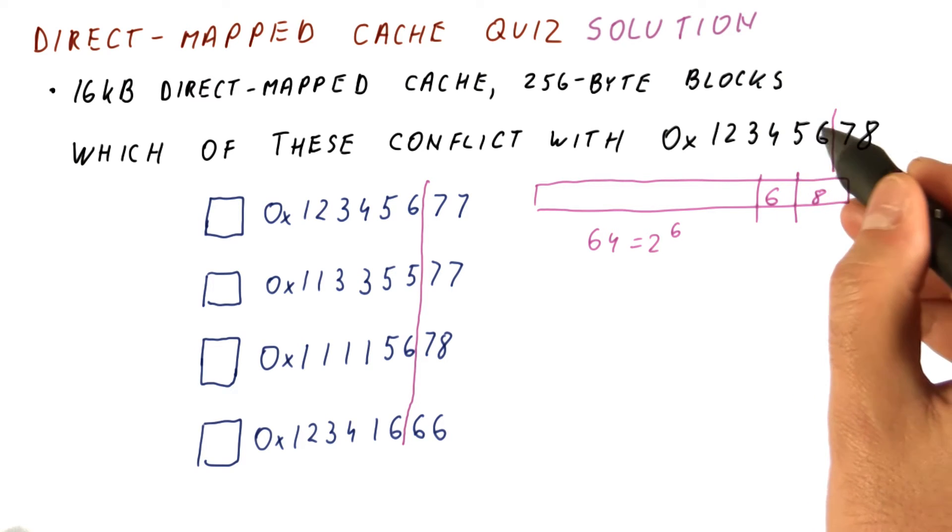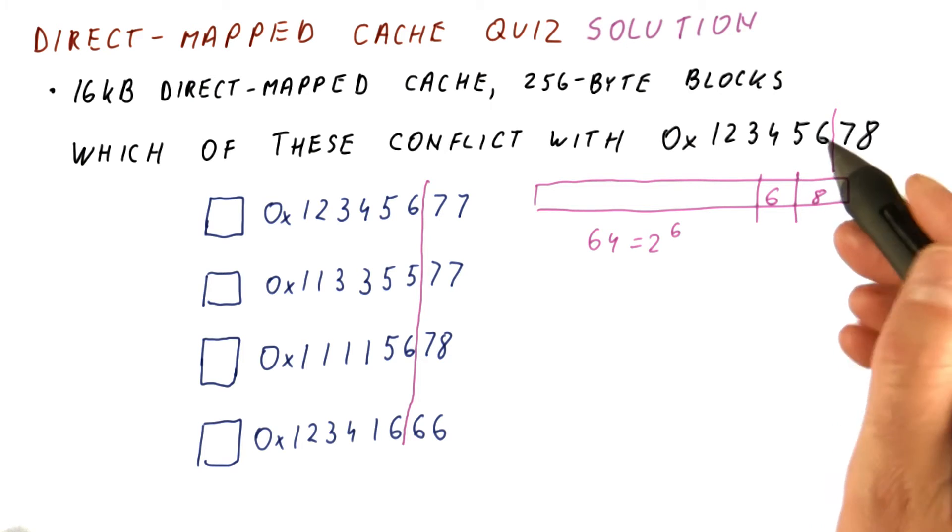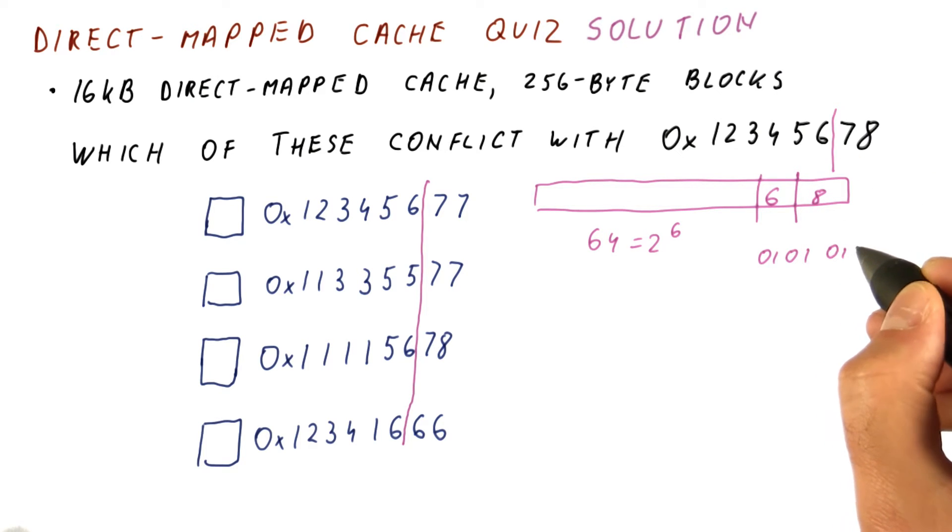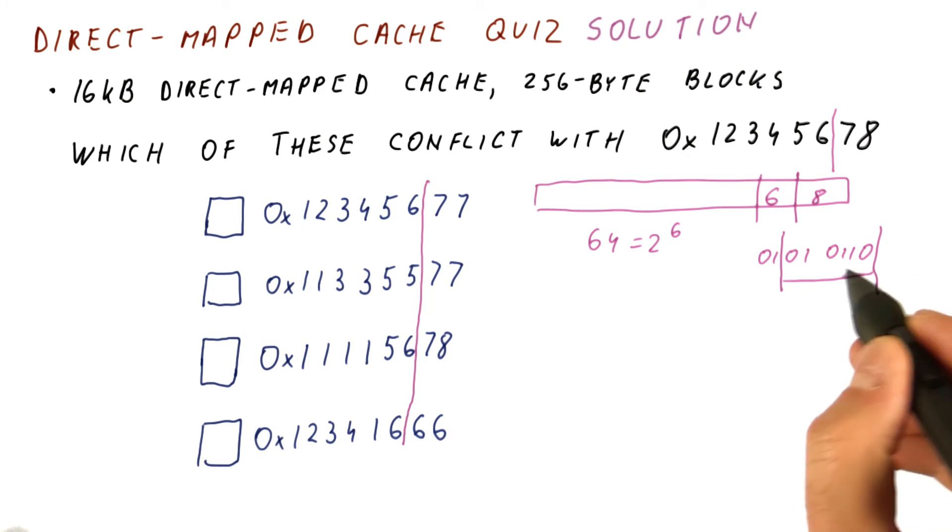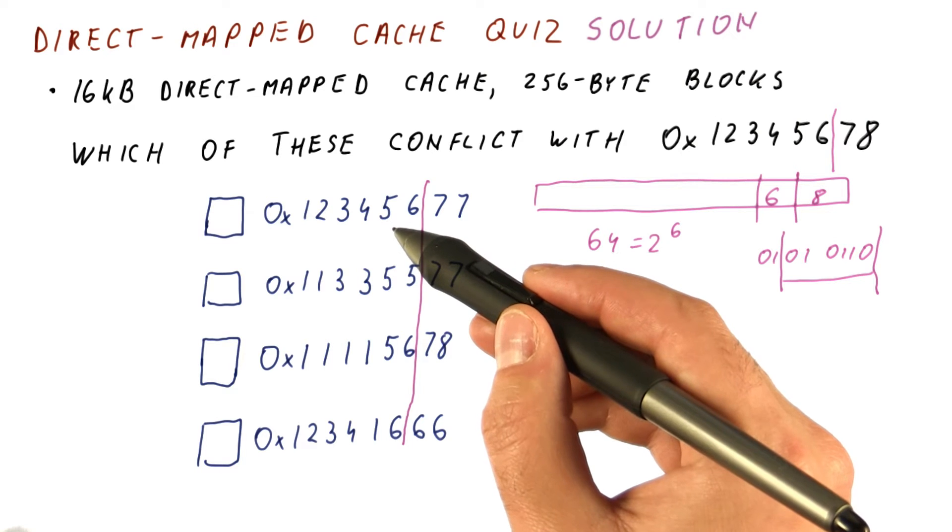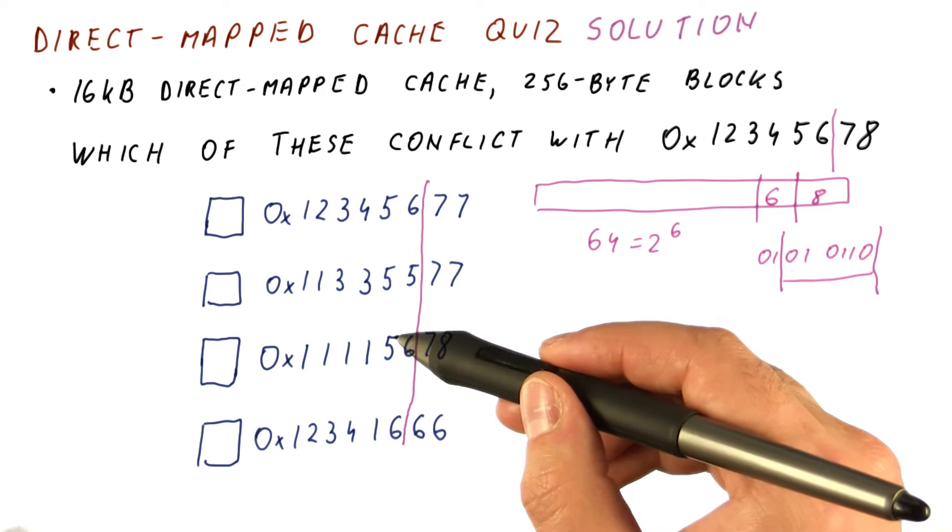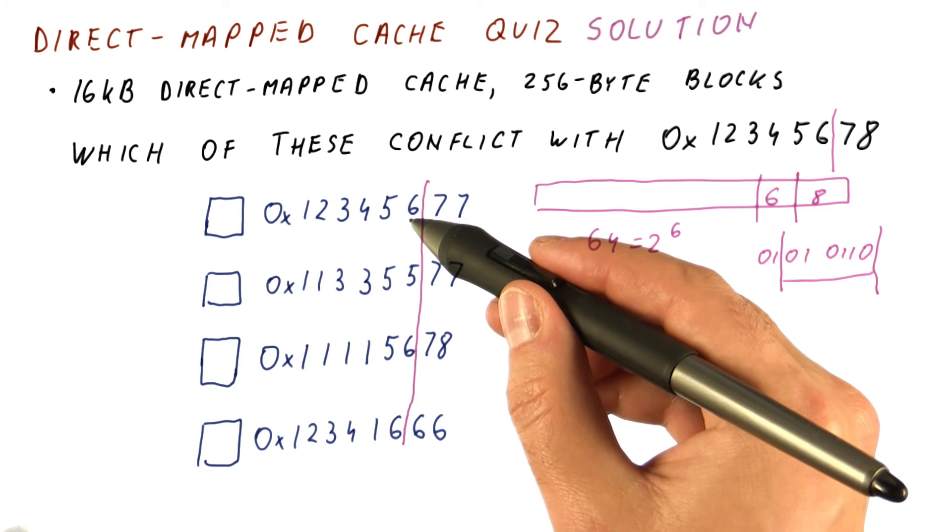The six bits will be contained in the next two hex digits. So for 56 hex, we can write it out as binary. This is five, this is six, and we are interested in these bits here. So we're really looking for which blocks have the same bits here. Those that have 56 definitely will have the same index bits. So we will definitely have a conflict here and here, possibly.